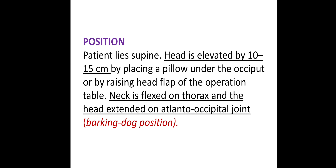Regarding patient position: the patient lies supine. The head is elevated by 10–15 cm by placing a pillow under the occiput or by raising the head flap of the operation table. The neck is flexed on the thorax and the head extended on the atlanto-occipital joint. This is the barking dog position.